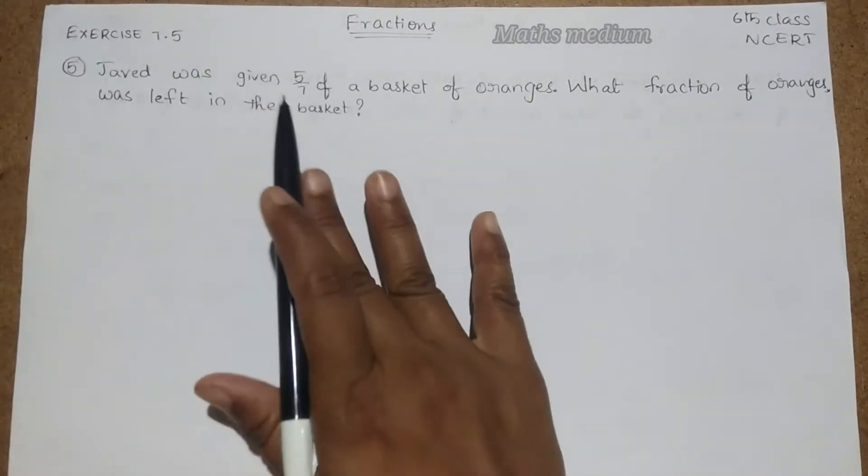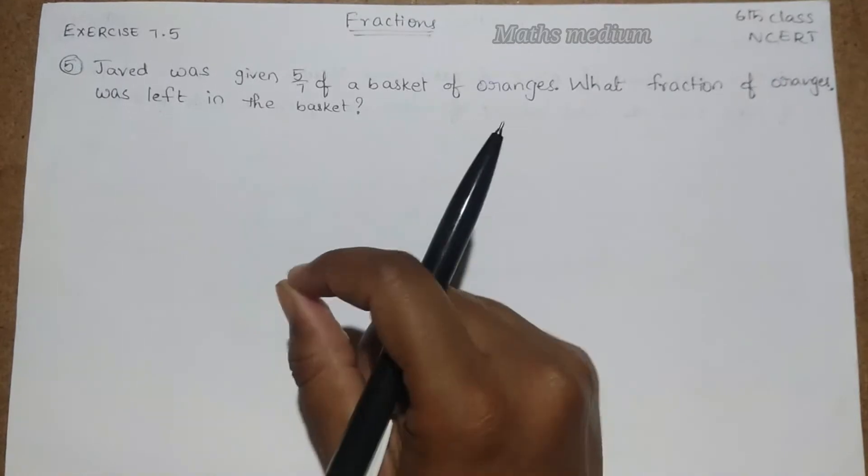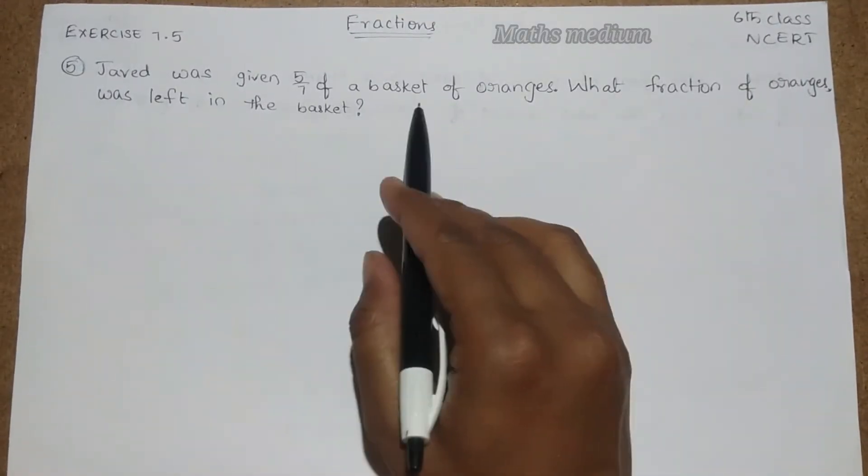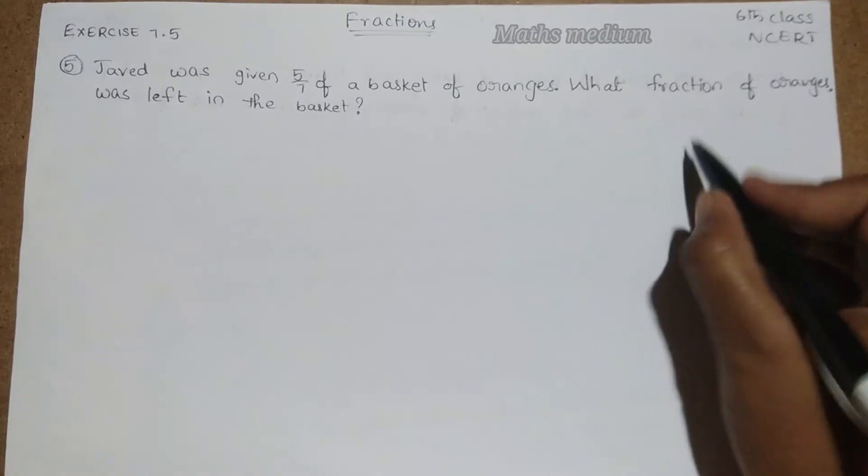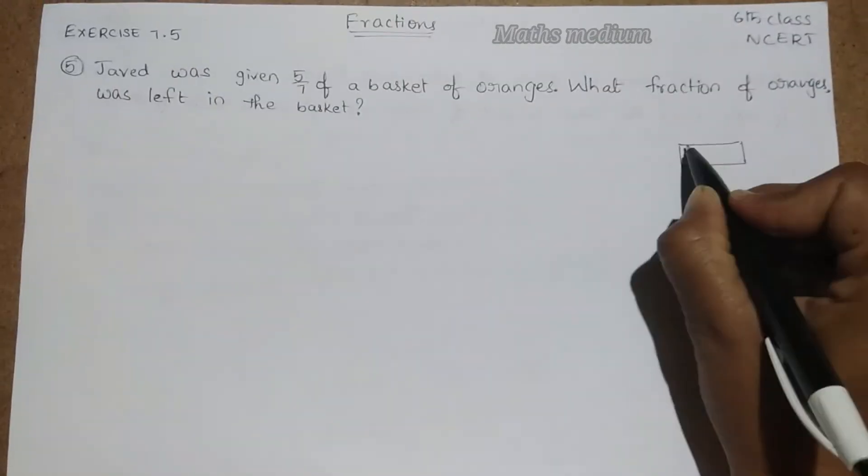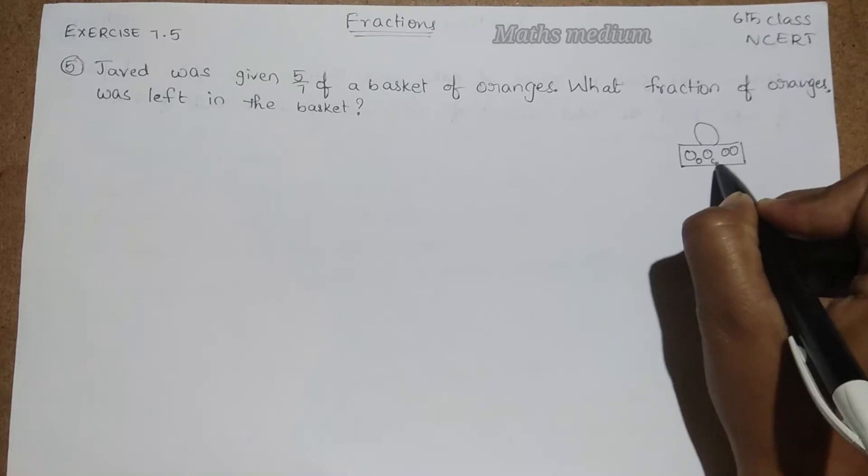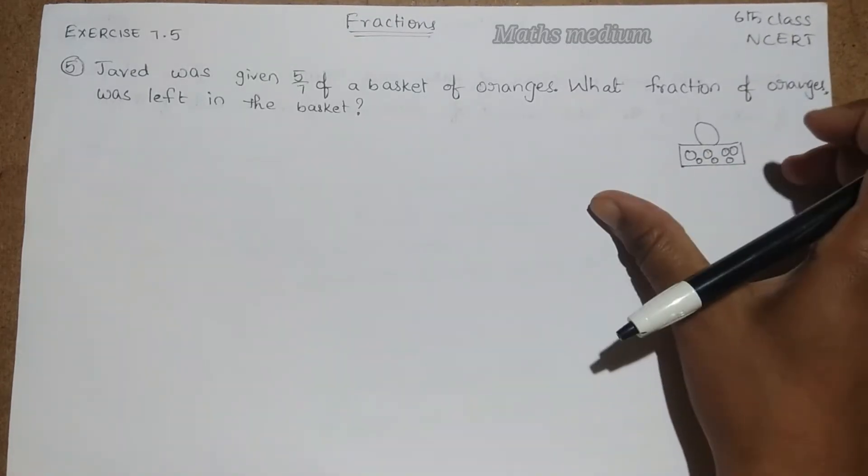In this question we have to analyze some of the steps. Because of 5 by 7 of the basket of oranges, we know basket, these are having oranges, right? These are the oranges in a basket.